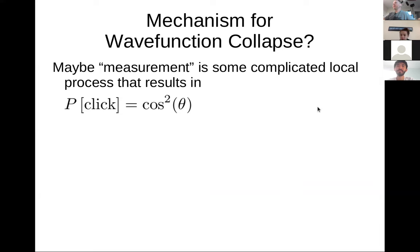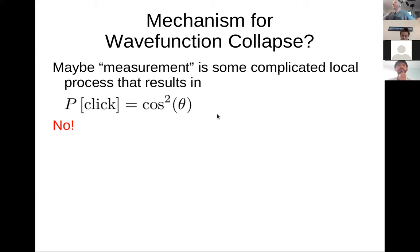Historically, people thought that measurement — going through a beam splitter and into detectors — was some complicated local process, and that quantum mechanics just describes the resulting probabilities. This way of thinking is common to those who haven't thought much about entanglement. But this is not really what's going on, which is why we're careful in quantum mechanics about how we talk about measurements.